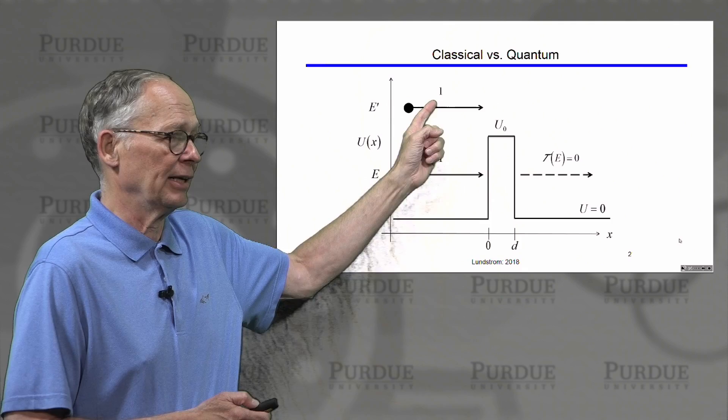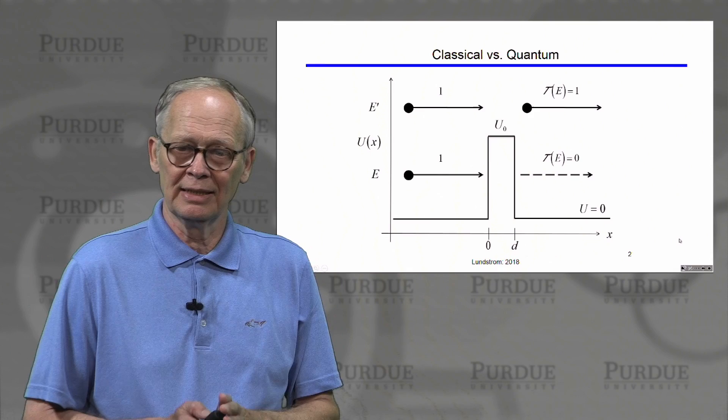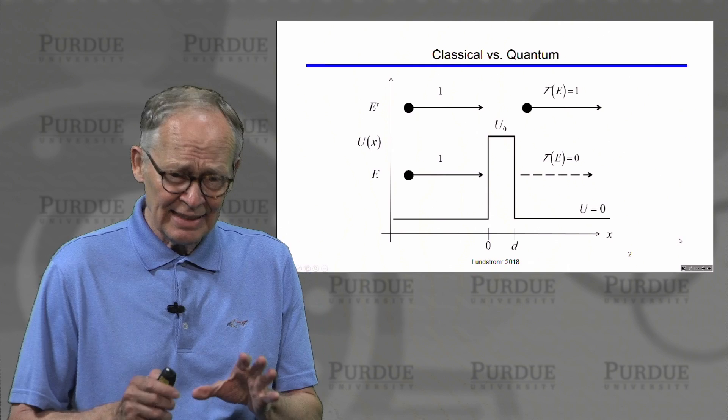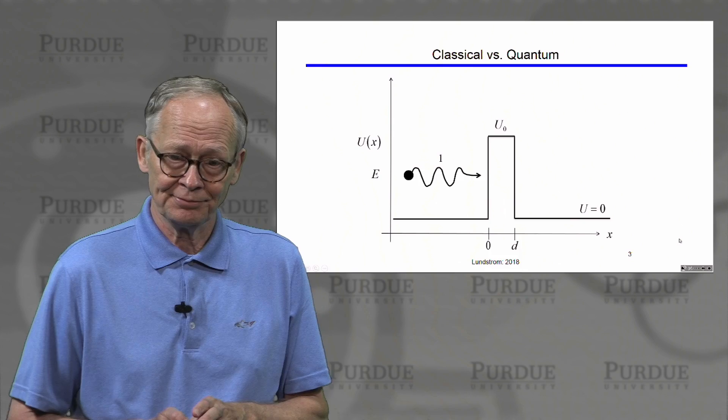If we look at an electron with a higher energy, above the top of this barrier, then there's no problem — the electron can go right across. The probability is one that it will transmit across and come out the other side. This is how electrons would behave if they were classical particles encountering a barrier.